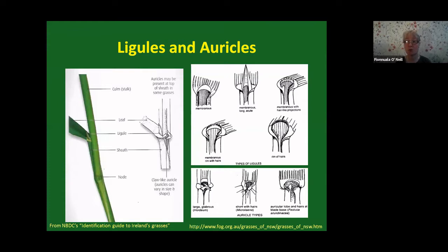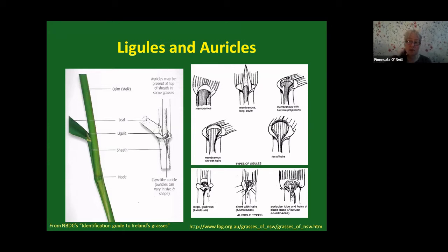Neither Poa nor Agrostis have auricles, so it's not something you're going to use when IDing these species. But certainly if you see any auricles, you know it's not a Poa and it's not an Agrostis — so that in itself is useful. Sometimes on the sheath as well, little hairs may be present, and this will come into play with one of the species of Poa.